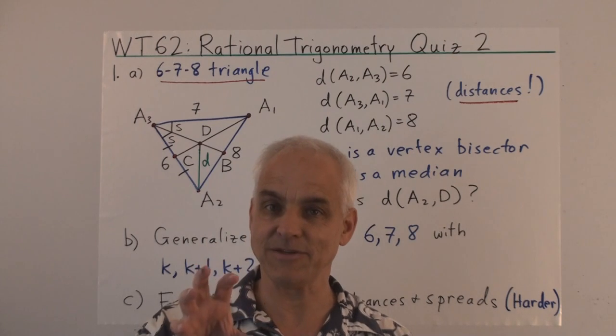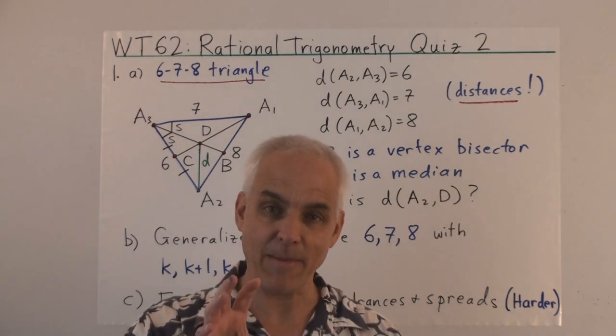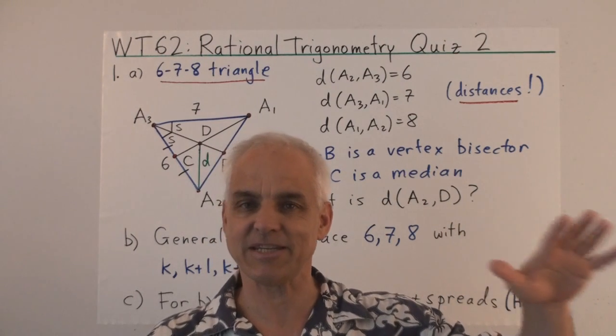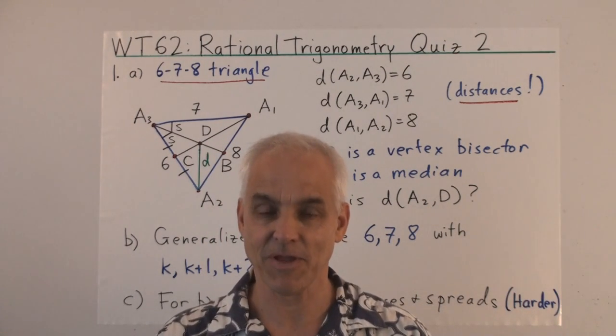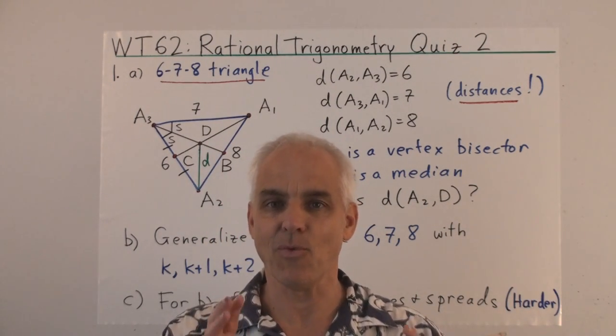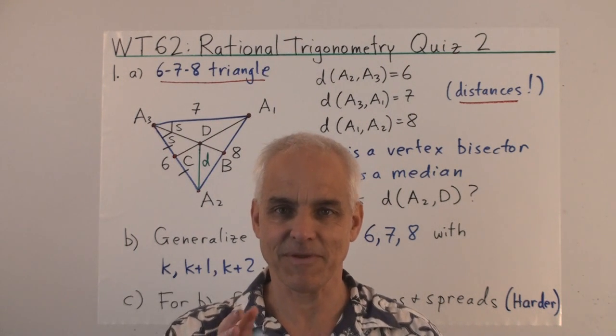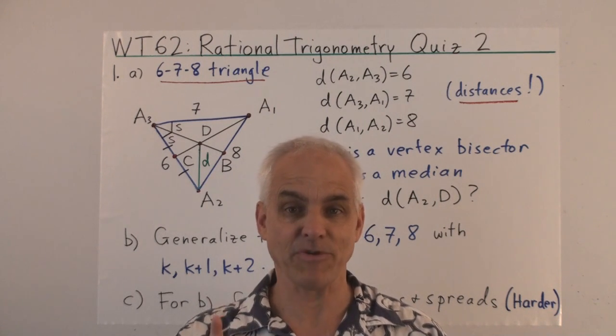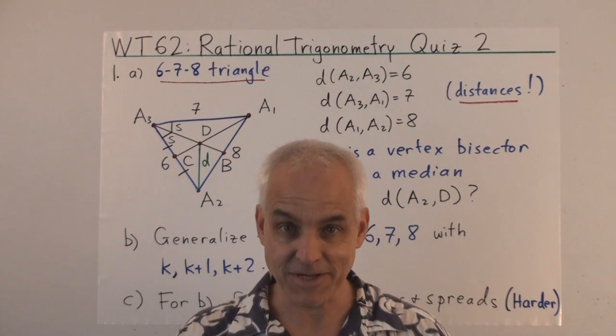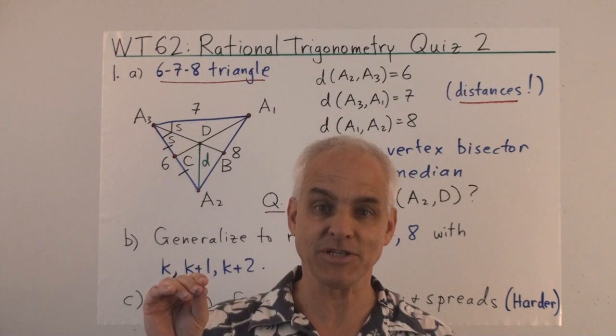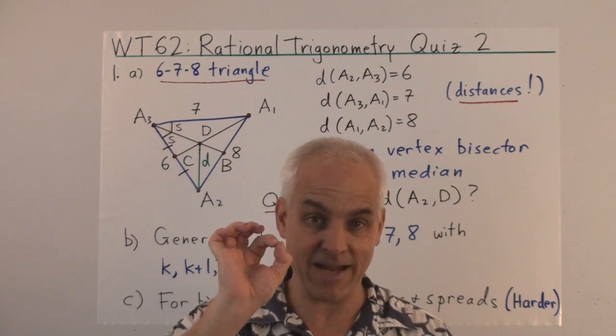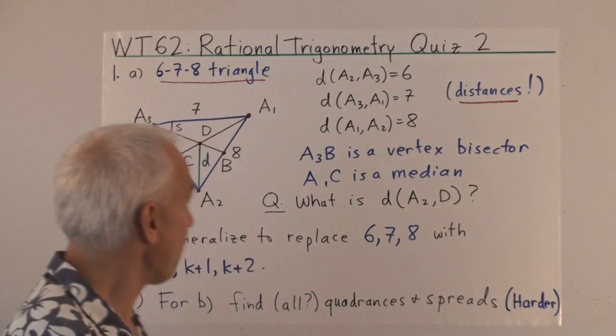These are problems that you can get your teeth into. You can spend a fair amount of time analyzing them, and there's many possibilities for further extension and exploration. So there's a lot to do with this quiz. Don't think that you can just do it quickly. And remember that in rational trigonometry we're interested in correct answers. That means decimal approximations are of little interest. We want to know what the exact answers are.